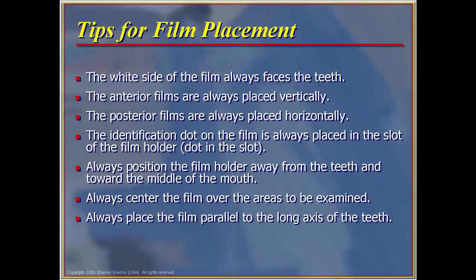Tips for film placement: the white side of the film always faces the teeth. Anterior films are always placed vertically and posterior films are always placed horizontally. The identification dot on the film is always placed in the slot of the film holder — called 'dot in the slot' — which orients the film to the biting surface of the teeth. Always position the film holder away from the teeth and toward the middle of the mouth. Always center the film over the area to be examined and place the film parallel to the long axis of the teeth.